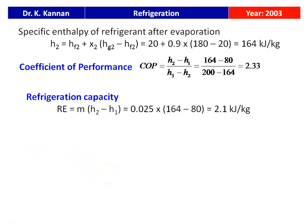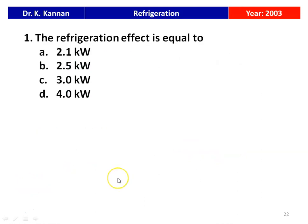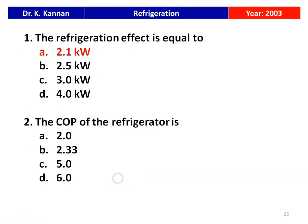The power required to drive the compressor equals m(H3 − H2) = 0.025 × (200 − 164) = 0.9 kW. So the two answers from this problem are: refrigeration effect = 2.1 kW and COP = 2.33. We solve the problem on the rough page in the answer booklet and then select the correct answer from the given options.